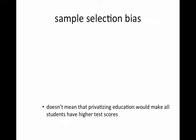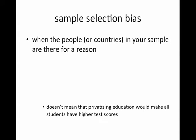Sample selection bias is when the people or countries in your sample are there for a reason — it's not random.